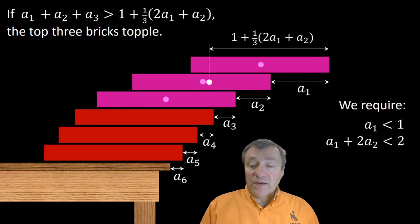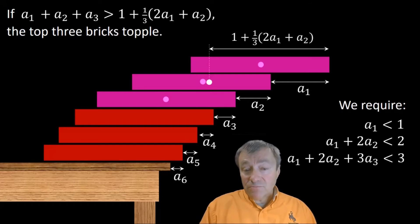If the combined center of mass of the top three bricks, if that's not lying directly above the fourth brick, then your top three bricks together will topple over. We don't want that. So, reverse the inequality, and we simplify, and we get A1 plus 2A2 plus 3A3 is less than 3, and I list that as my new condition.